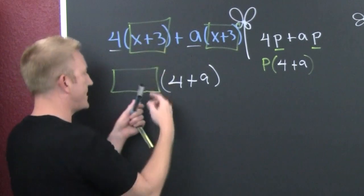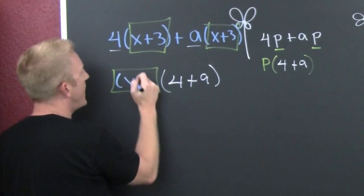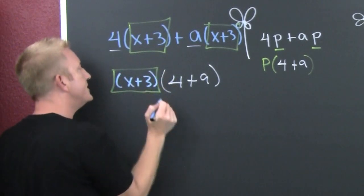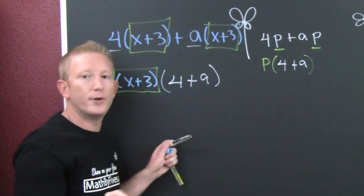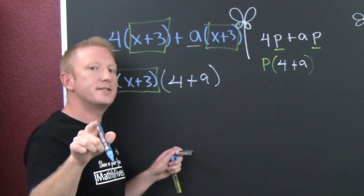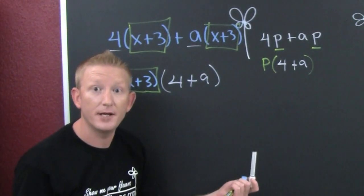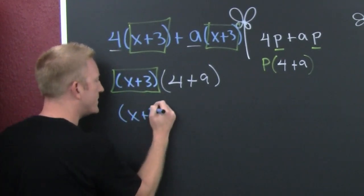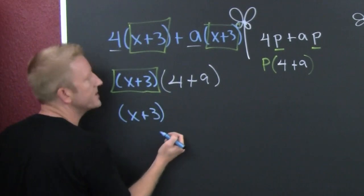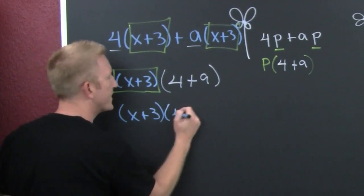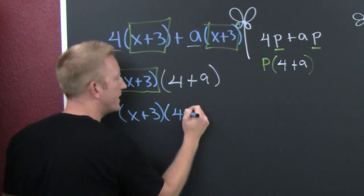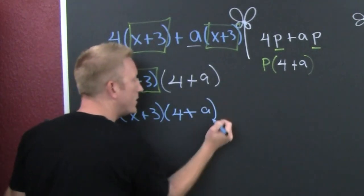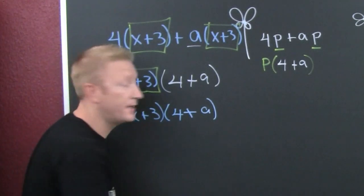What was in that square? It was x plus 3. What are we doing? We're giving you the tools and the skills necessary to factor by grouping which is coming up next. So that's (x+3) times (4+a).